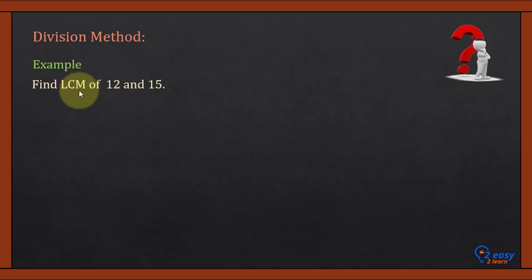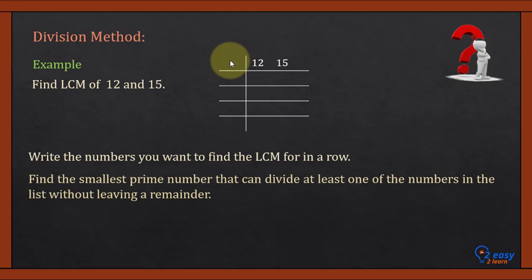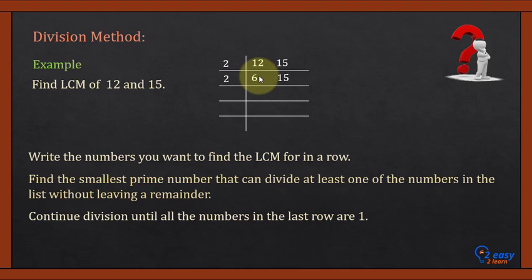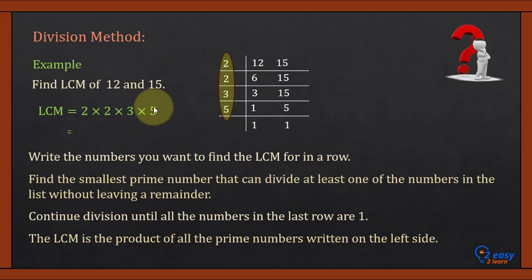Division method: we want to calculate the LCM of 12 and 15 using the division method. We make a table and list the numbers in a row, then find the smallest prime number which divides both or any one of these numbers. 2 can divide 12 but not 15. Then 2 can divide 6 but not 15. Then 3 can divide both numbers, and 5 can divide 5, giving us 1 and 1 in the last row. The product of the numbers on the left is the LCM: 2 × 2 × 3 × 5 = 60.